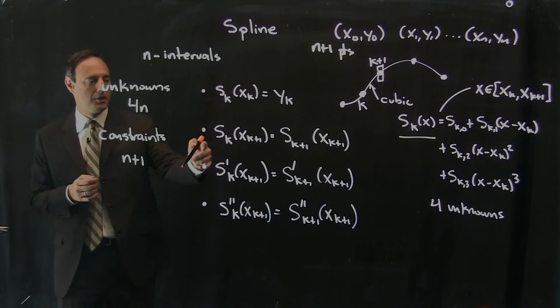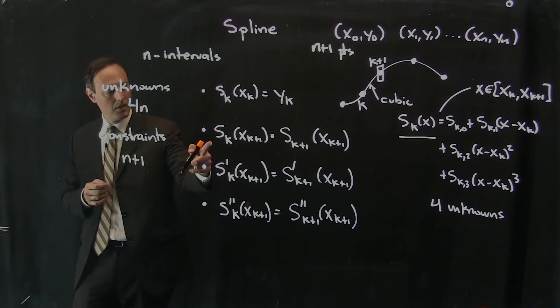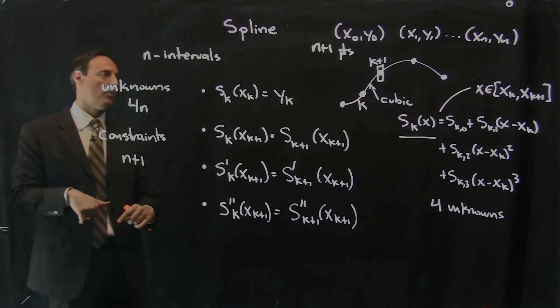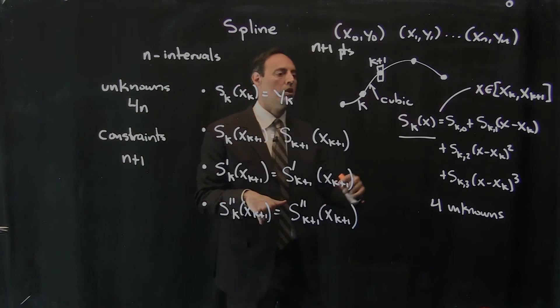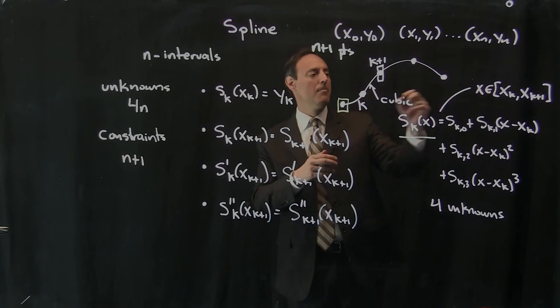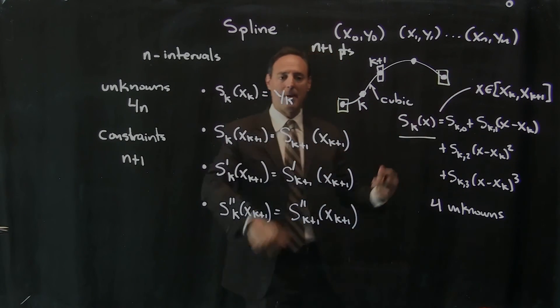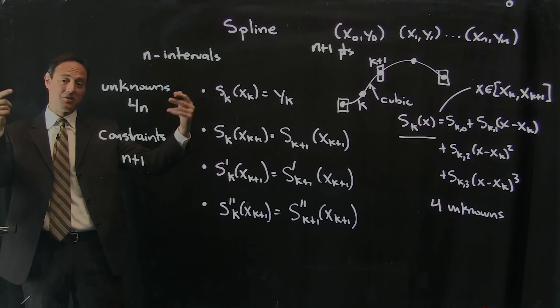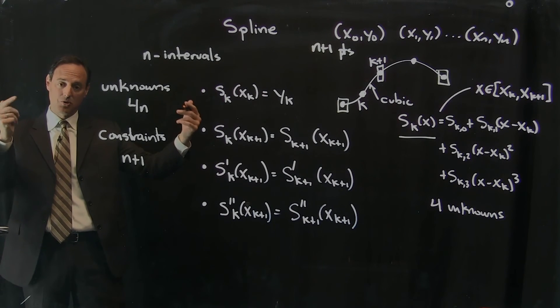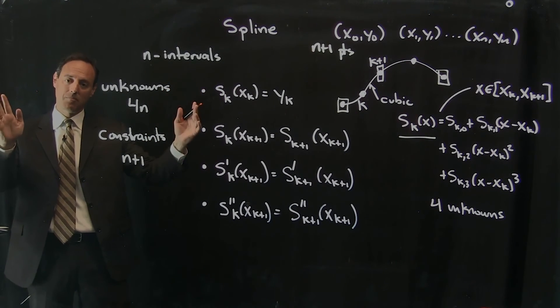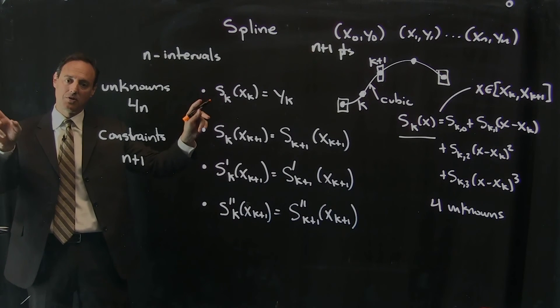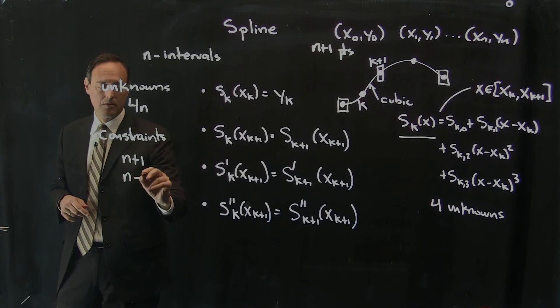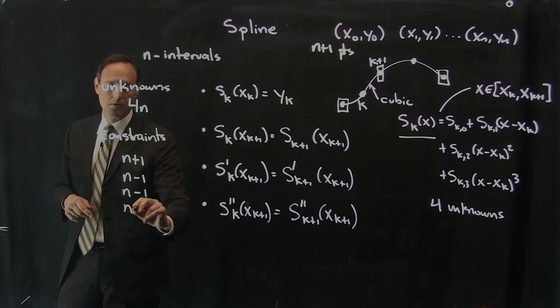Now, interestingly, here, this says the solution and the derivatives and the second derivatives have to match every single one of the points. Well, how many points are there? Well, there's all these points, but notice the end points don't have anybody to match to. So although there's n plus 1 points, the first and the last point, there's no matching condition there. So it's all the n points that are in the interior. So if I have n plus 1 points and I take away the two end points, then this is n minus 1 points, n minus 1 points, and n minus 1 points.